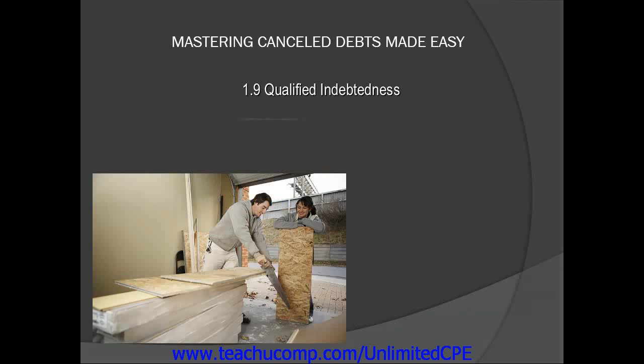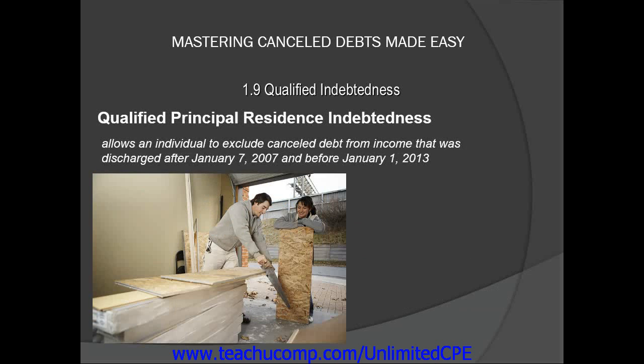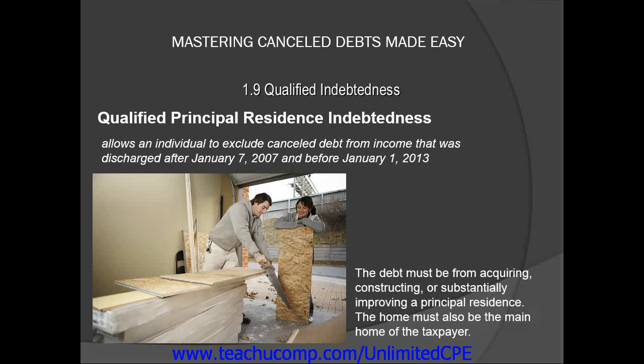Qualified Principal Residence Indebtedness is a provision that allows an individual to exclude canceled debt from income that was discharged after January 7, 2007 and before January 1, 2013. In order to qualify as Principal Residence Indebtedness, the debt must be from acquiring, constructing, or substantially improving a Principal Residence. The home must also be the main home of the taxpayer.